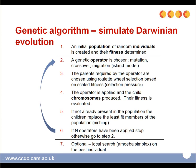The genetic algorithm is able to simulate Darwinian evolution. First, an initial population of random individuals is created and their fitness determined. Then a genetic operator is chosen — it can be mutation, crossover, or migration in an island model. The parents required by the operator are chosen using roulette wheel selection, which is based on the scaled fitness. This is what we call selection pressure.